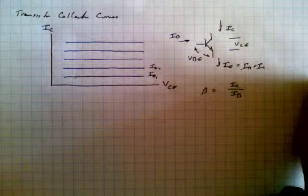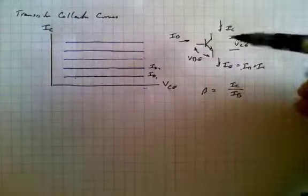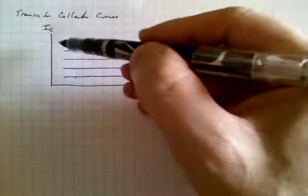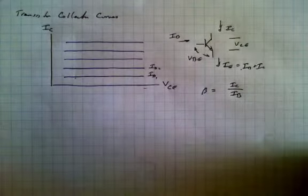And so now the question we might ask ourselves is what happens at the extremes? What happens at this extreme over here when the voltage across here becomes very great? And what happens in this region over here where the voltage across here becomes very, very small?